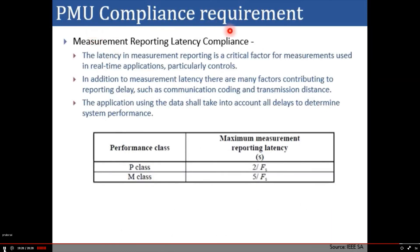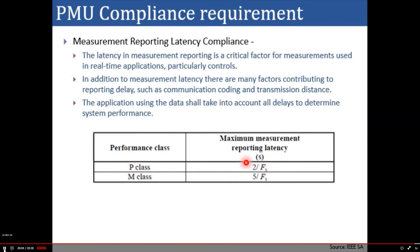For PMU compliance with respect to latency: latency in measurement reporting is a critical factor for real-time applications, particularly in controls. In addition to measurement latency, factors such as communication coding and transmission distance contribute to reporting delays, and applications must account for all these delays. For P class, the maximum delay is 2/FS (where FS is the frame reporting rate). For M class, the maximum delay is 5/FS.